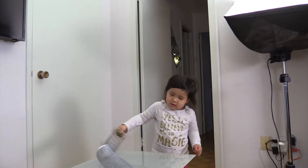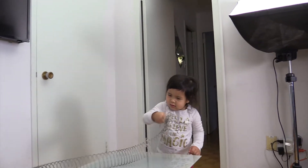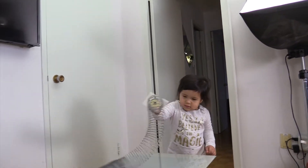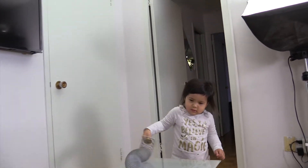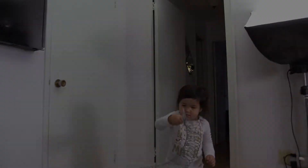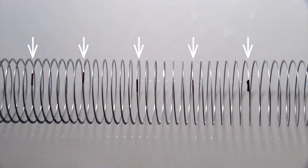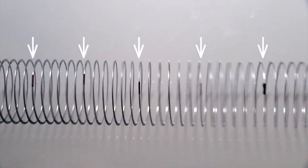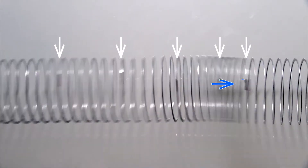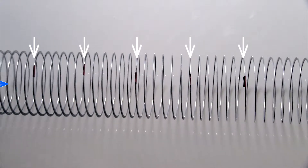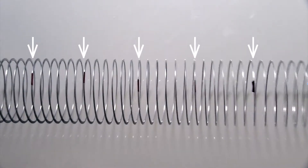Using the slinky, we can also observe vertical, horizontal, and circular polarization of waves. Note that the spring represents the medium in which a wave is propagating.